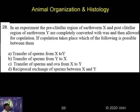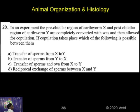Transfer the sperm from X to Y; transfer the sperm from Y to X; transfer of sperm over X and Y; and the reciprocal exchange of sperm between X and Y — which one is correct? The correct answer is Option B: transfer of sperm from Y to X.